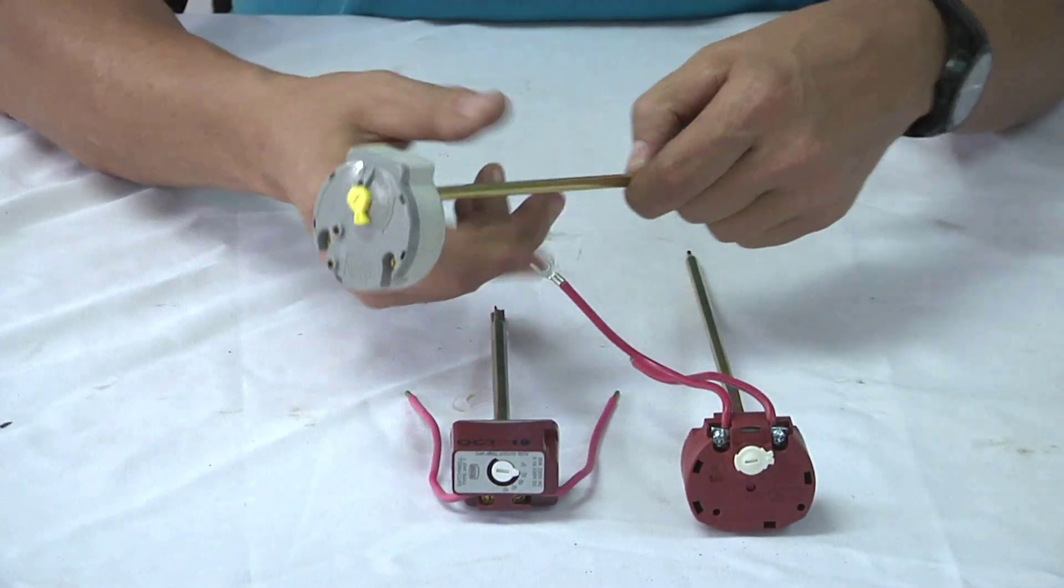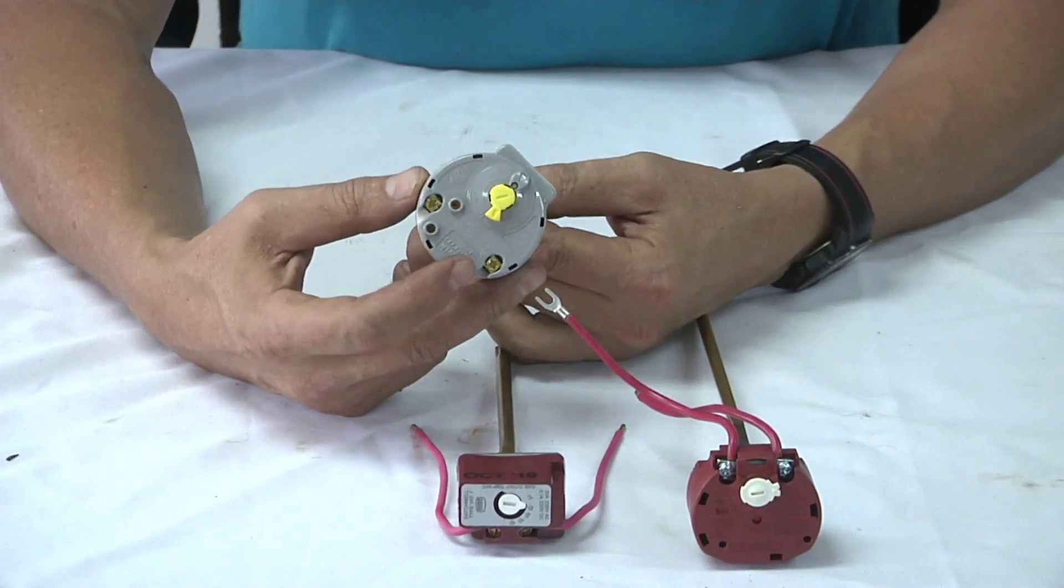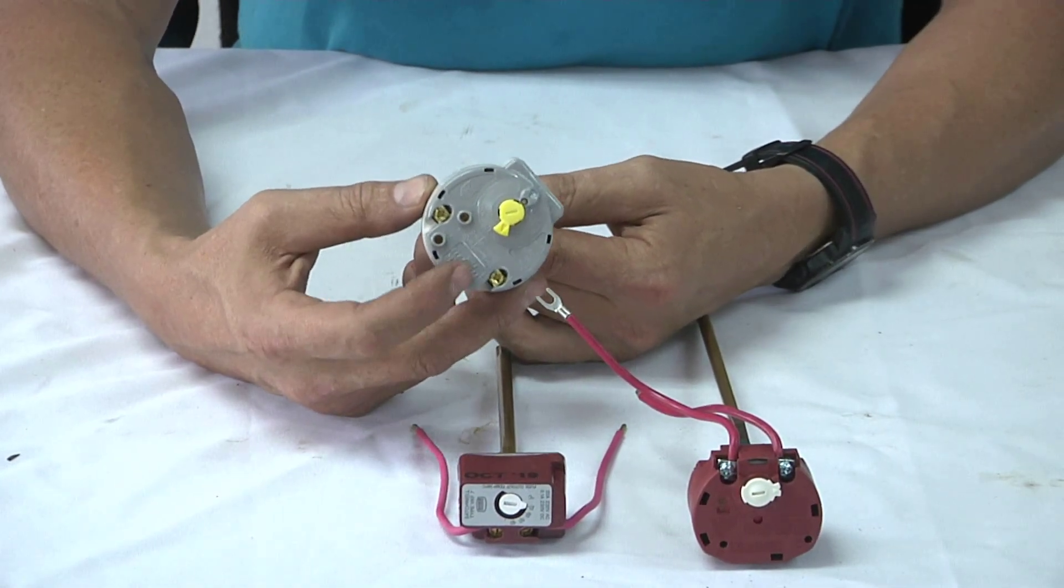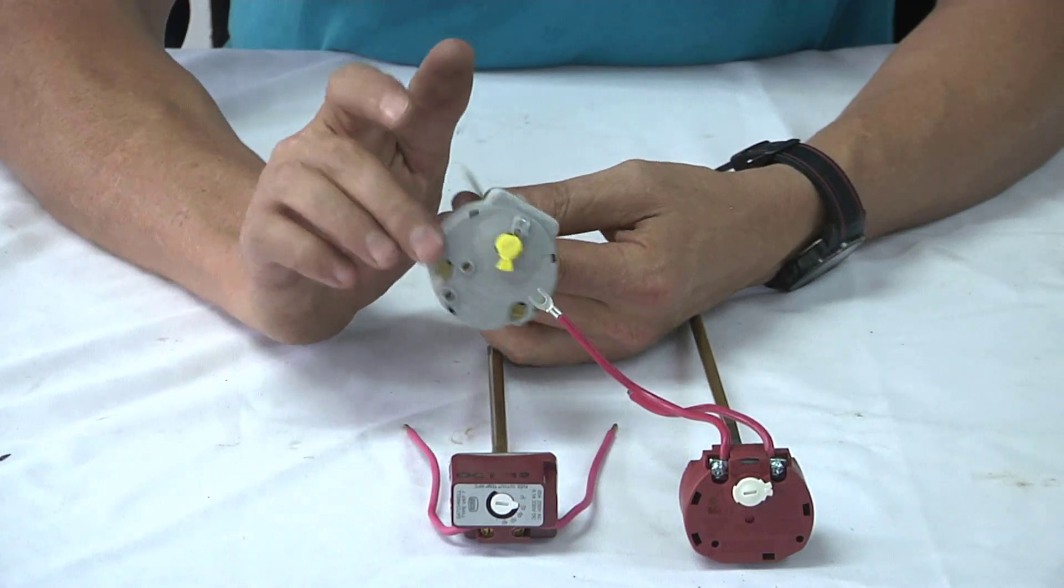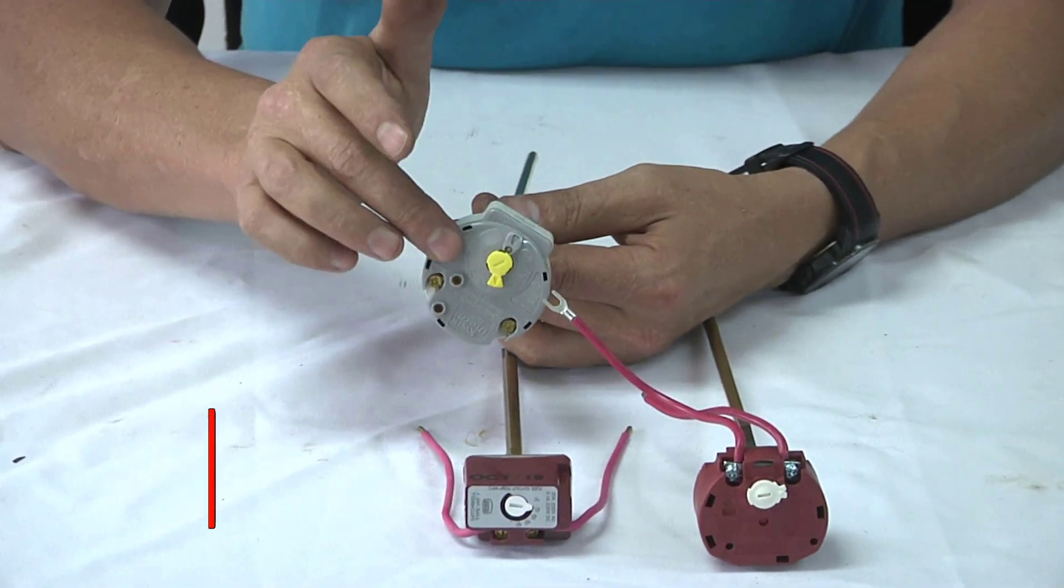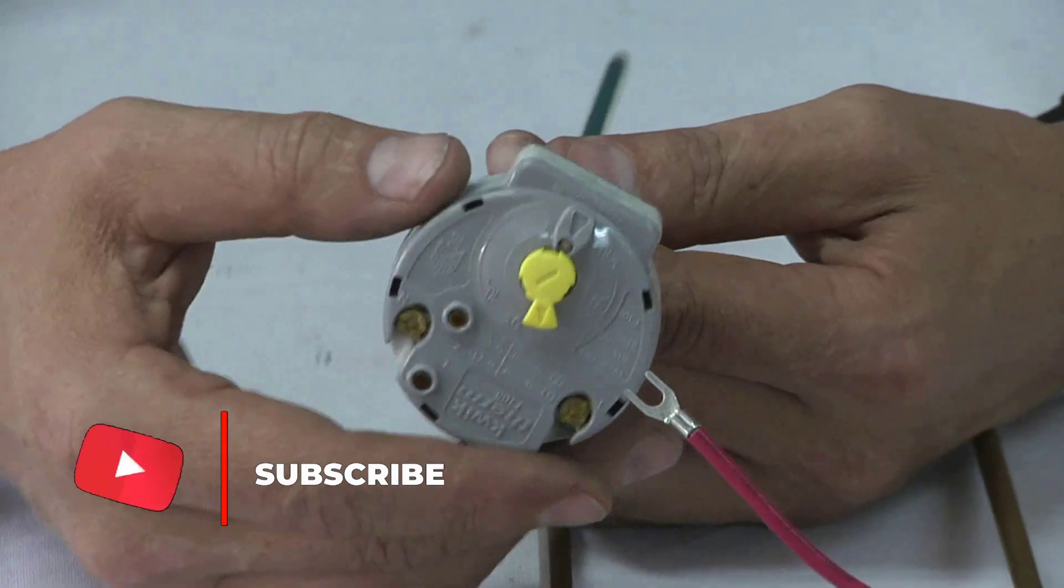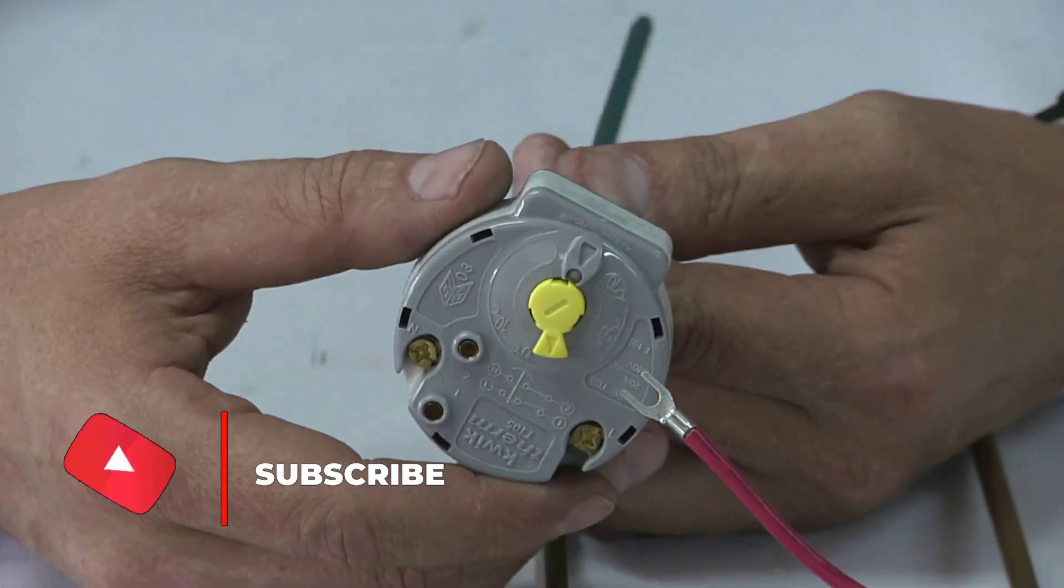An important thing to know is a thermostat should never be set higher than 60 degrees. 60 degrees is the recommended temperature. Never set your thermostat to 70 degrees. I'm going to show you exactly how to set this thermostat and regulate the temperature.